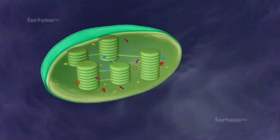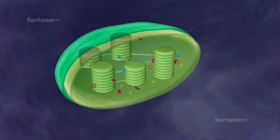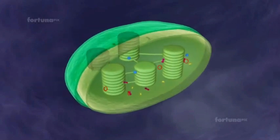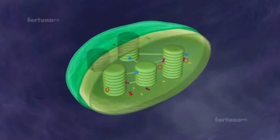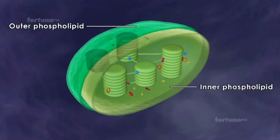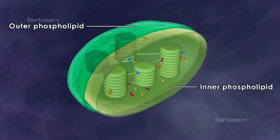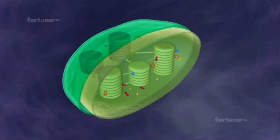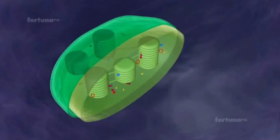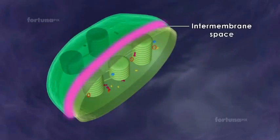The chloroplast is enclosed in a double membrane — the inner and outer phospholipid layers. Between these two layers is the intermembrane space.